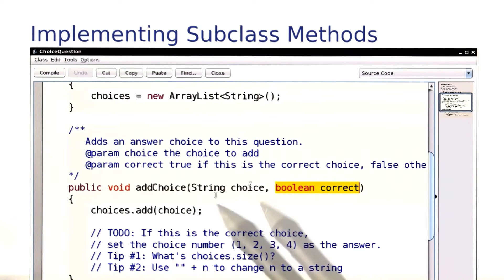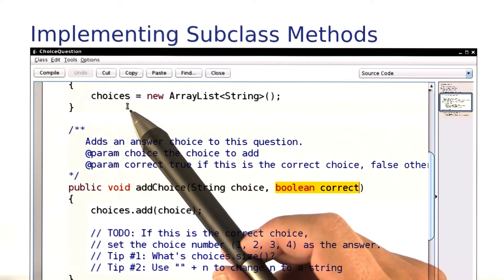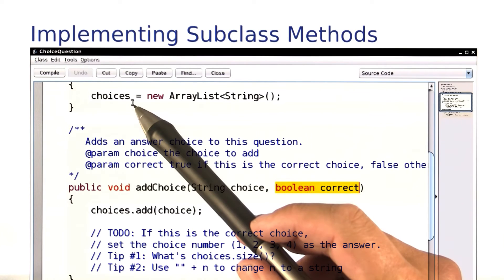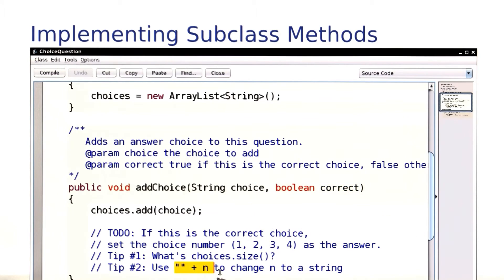How do you know which choice it was? It's not passed as a parameter to addChoice, but you can tell by looking at how many elements are already in the choices array. Of course, when you ask the choices array for its size, that's an integer, and answers are strings. Just concatenate with the empty string to change the integer to a string.